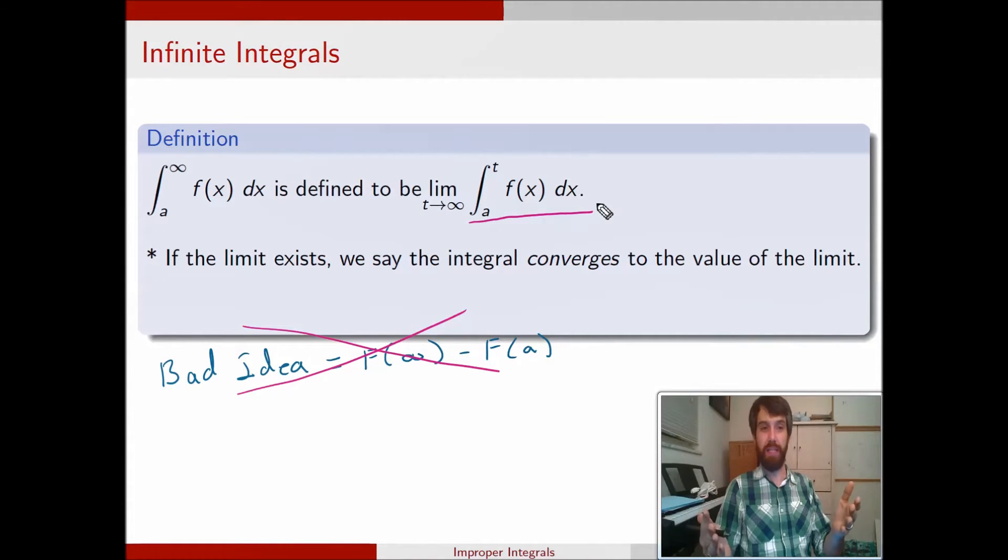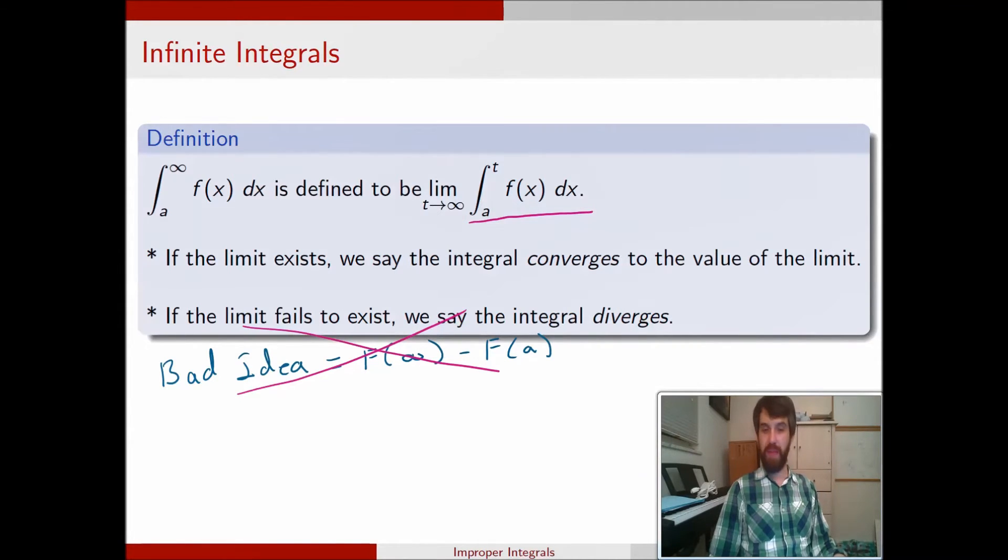Therefore, whatever the value of that limit is, is going to be the value of this improper integral. If this is not the case, if the limit does not exist, if maybe it diverges to infinity, or it oscillates, or diverges to minus infinity, many different possibilities, if the limit doesn't exist, then we're going to say that it diverges.